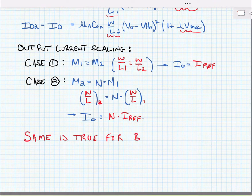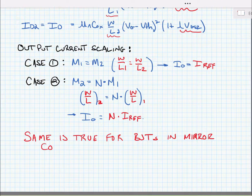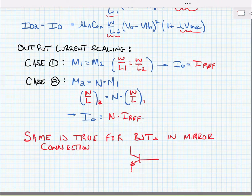The same is true for BJTs in a mirror connection. So a simple BJT current mirror, something like this.